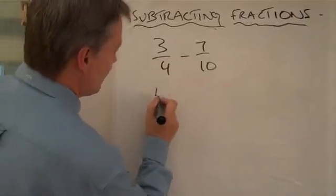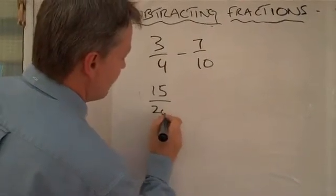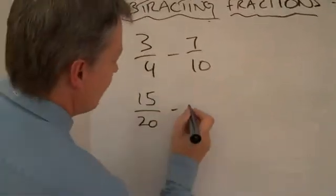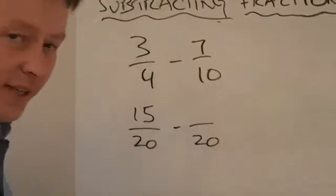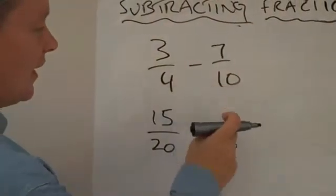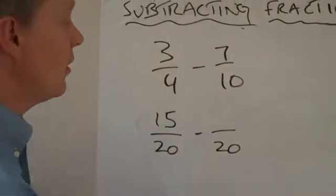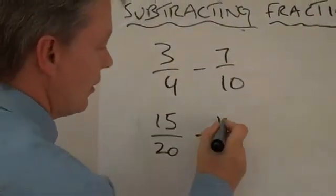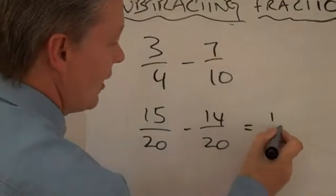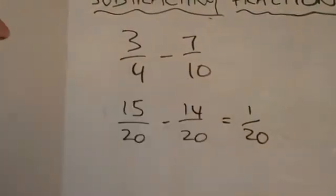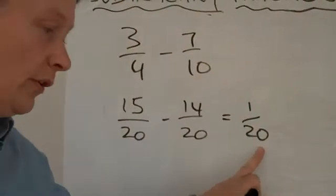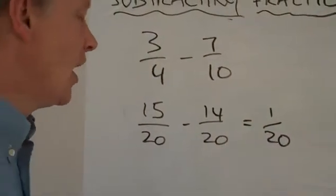And that three quarters is 15 over 20, and that seven tenths can be something over 20 as well. So 10 into 20 goes twice, 2 times 7 is 14. So the answer to this question, three quarters take away seven tenths, is one twentieth.